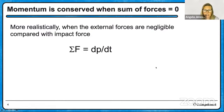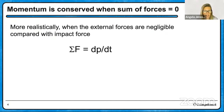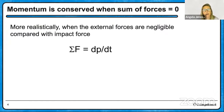Newton's Second Law states that the sum of forces on an object or system equals the rate of change of momentum. If the sum of forces on your system is zero, that means the right side is also zero, so momentum doesn't change. Momentum is conserved if all forces on your system add up to zero, or more realistically, if the external forces are negligible compared to the contact force between two objects — like two cars colliding, where friction with the road is nothing compared to the contact forces.